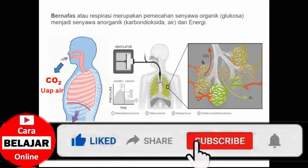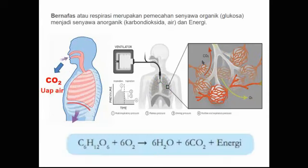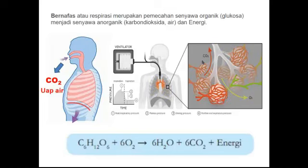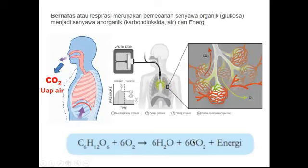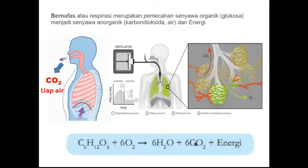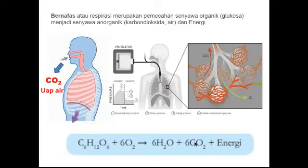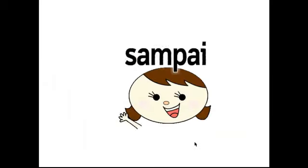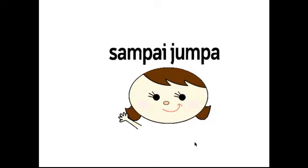Jadi saya tekankan di sini bahwa CO2 di sel-sel tubuh dari mana? Karena adanya pemecahan senyawa organik atau glukosa. Dan menghasilkan senyawa anorganik berupa H2O, air, dan CO2. Ini terjadi di sel-sel tubuh. CO2 dan H2O bisa keluar: untuk CO2 dikeluarkan melalui paru-paru, tapi kalau H2O bisa melalui paru-paru, bisa juga melalui organ yang lain. Jadi, dengan demikian, paru-paru itu punya dua fungsi: bisa untuk bernafas, bisa juga dikatakan sebagai proses pengeluaran sisa metabolisme. Itu anak-anak tentang sistem ekskresi pada paru-paru. Untuk video berikutnya, akan membahas sistem ekskresi pada organ yang lain. Terima kasih. Wassalamualaikum warahmatullahi wabarakatuh.